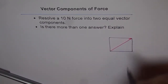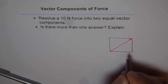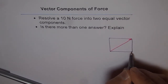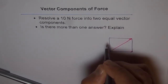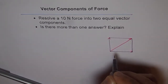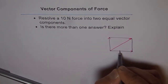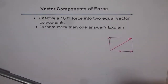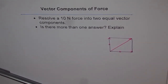If this is the force, then we can have two equal components along the sides of the square. Since the sides are equal, their magnitudes are equal also. So that could be a solution to our problem. This is the approach we are going to take to solve this question.